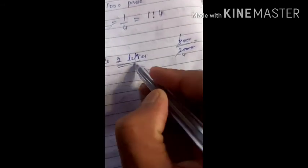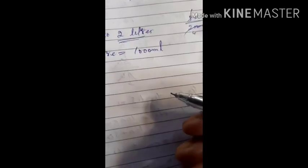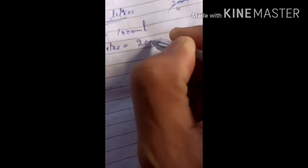Part d is 500 ml to 2 liters. Now here it's in ml and this is in liters. One liter is equal to 1000 ml. So this 2 liters equals 2000 ml.